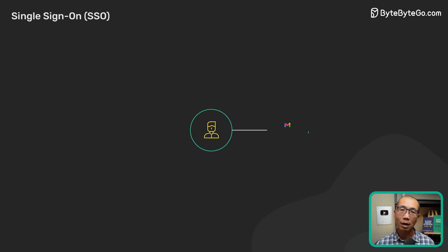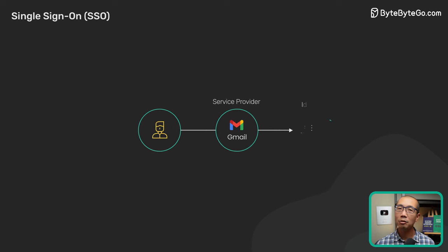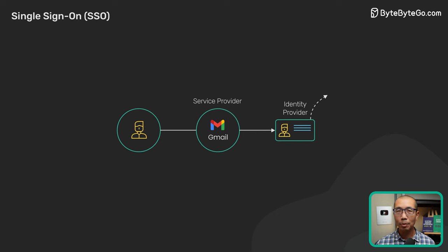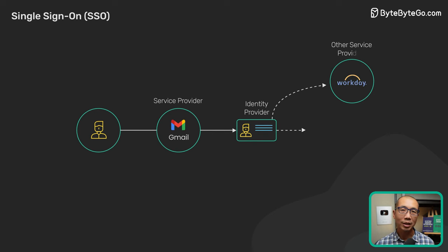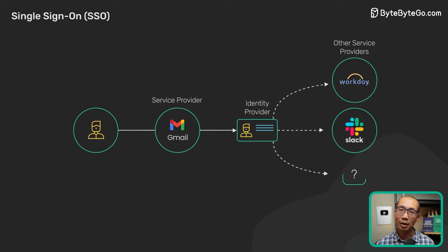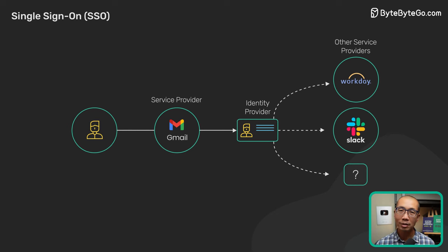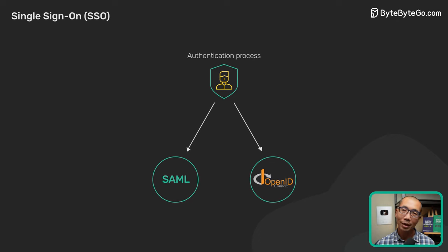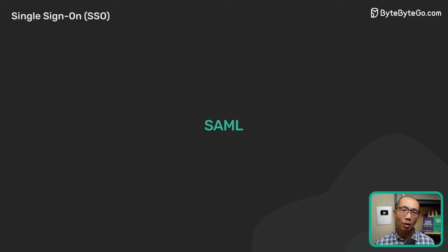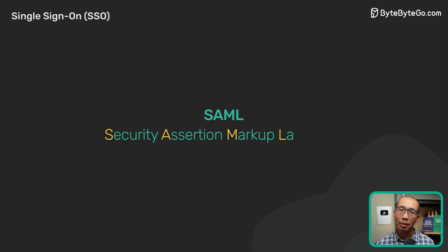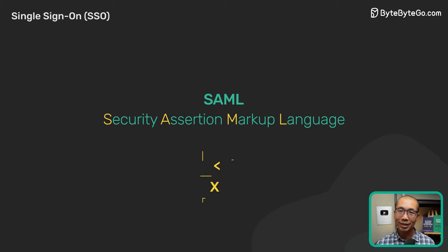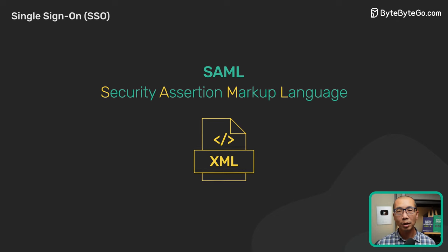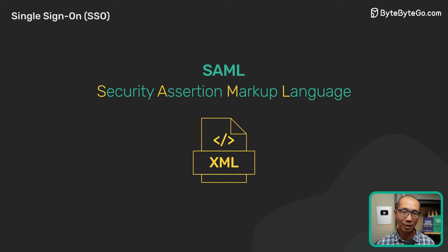SSO is built on a concept called Federated Identity, which enables sharing of identity information across trusted but independent systems. There are two common protocols for this authentication process. SAML, or Security Assertion Markup Language, is an XML-based open standard for exchanging identity information between services.